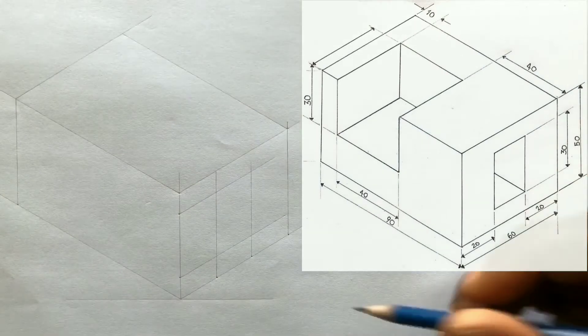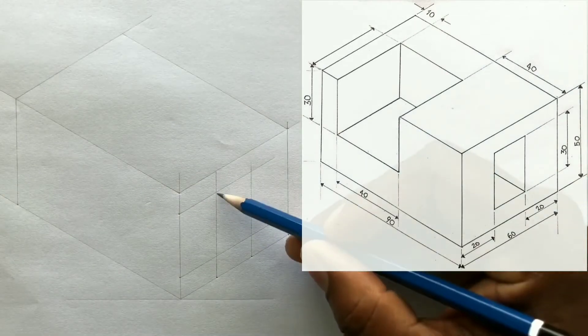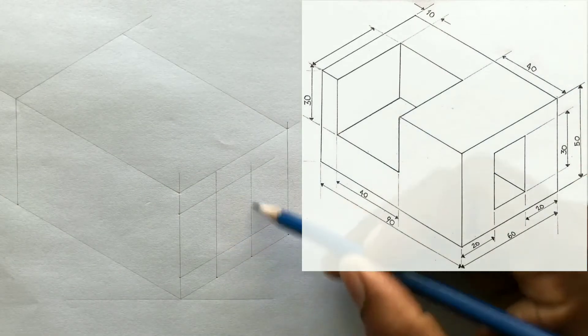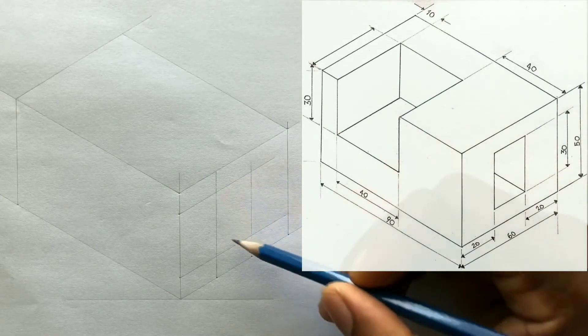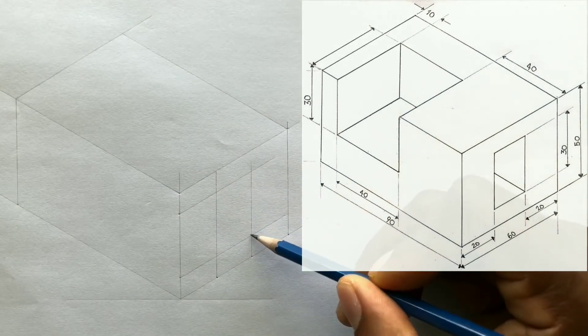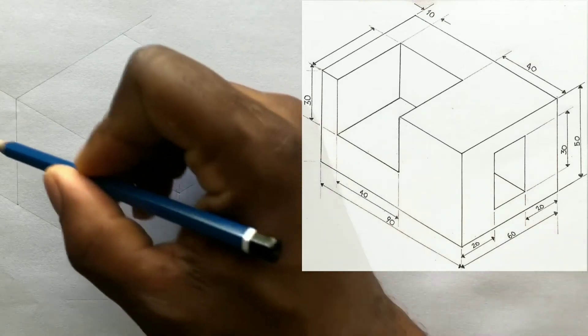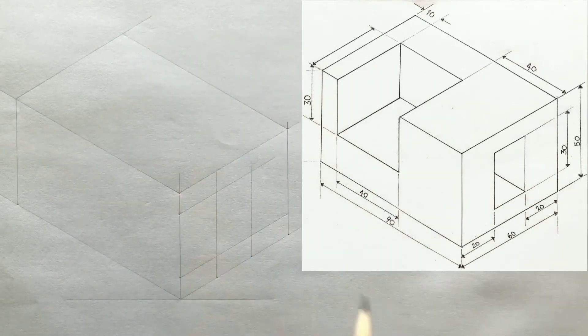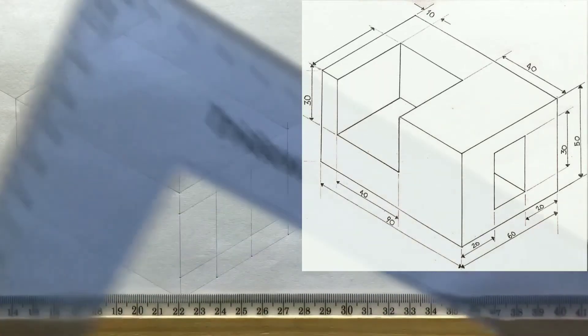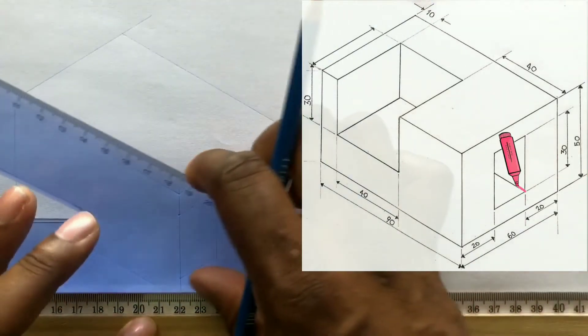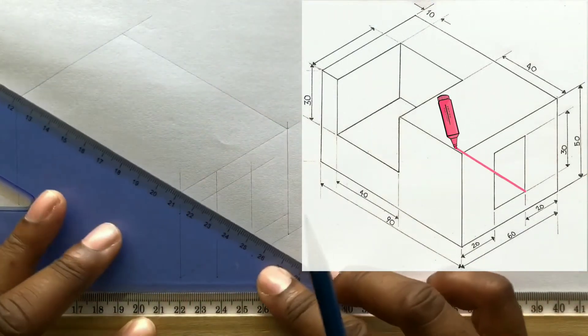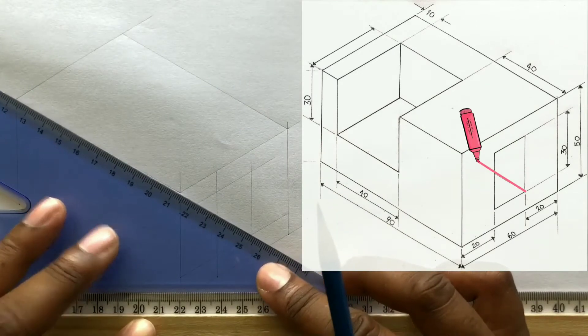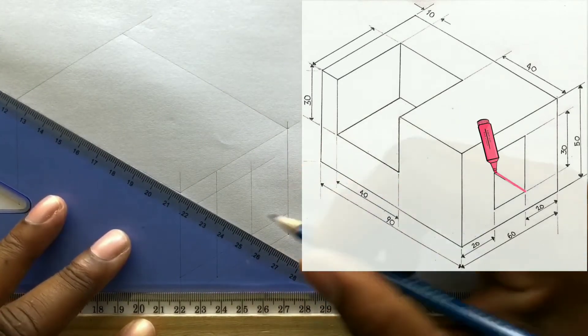Now in order for this section to be complete, a line will be drawn from this point in this direction. Use your set square along with your t-square and draw this line.